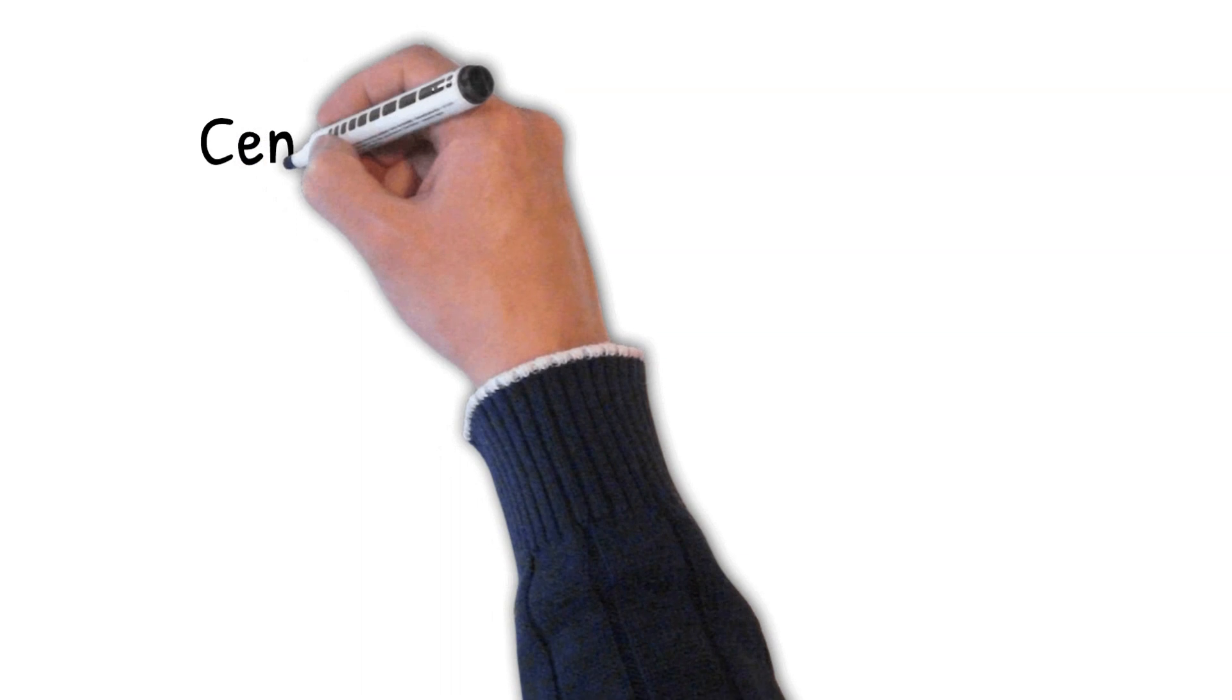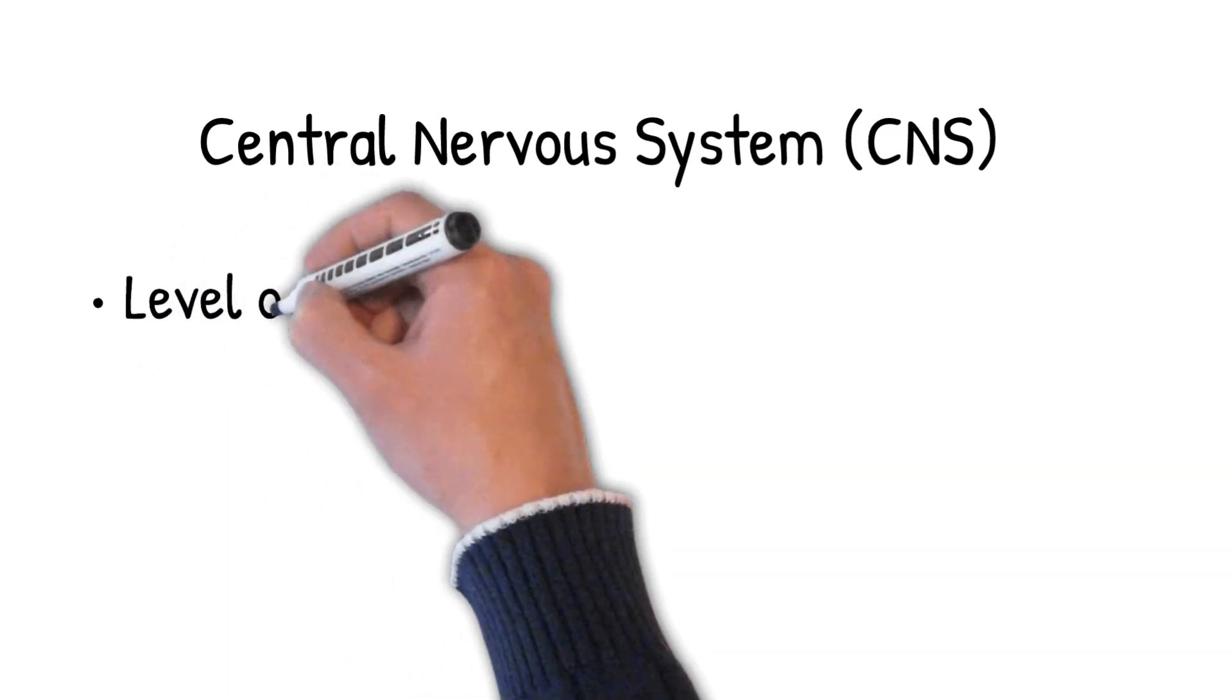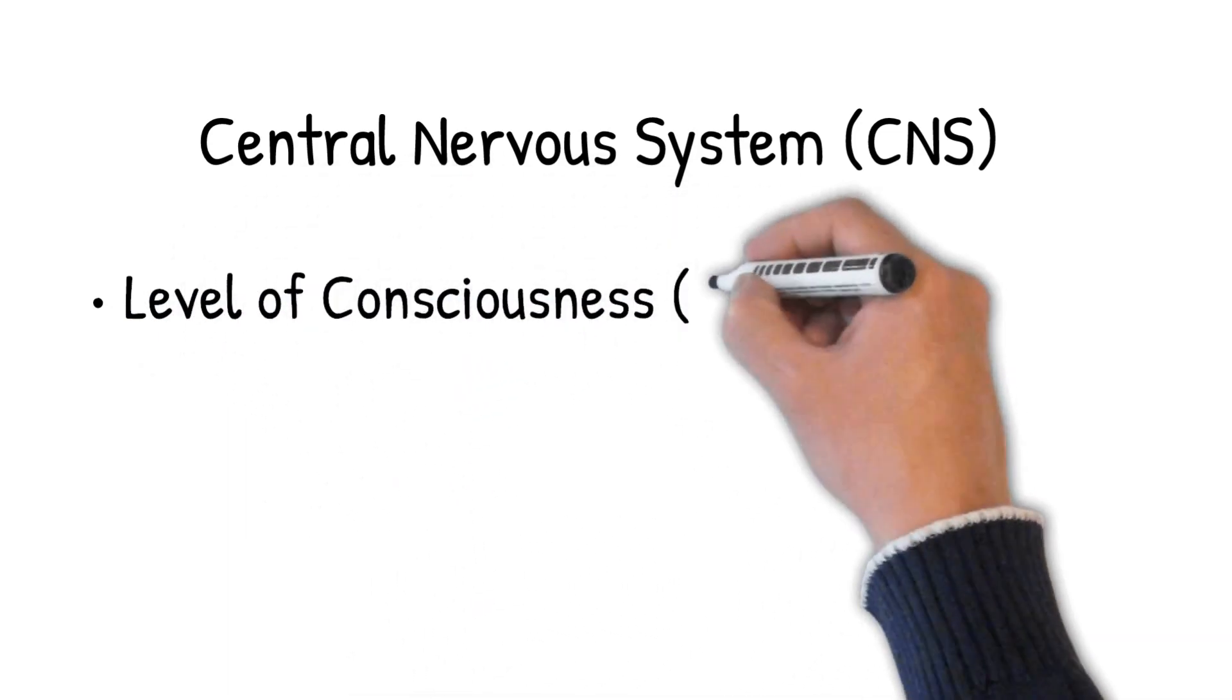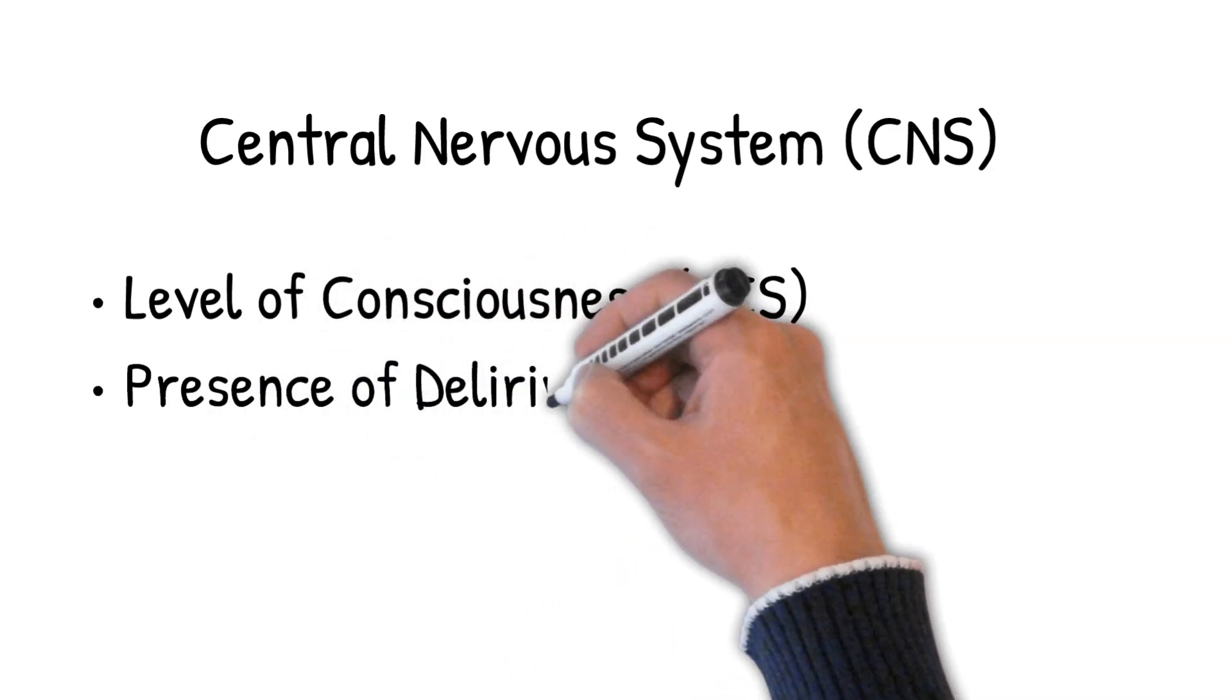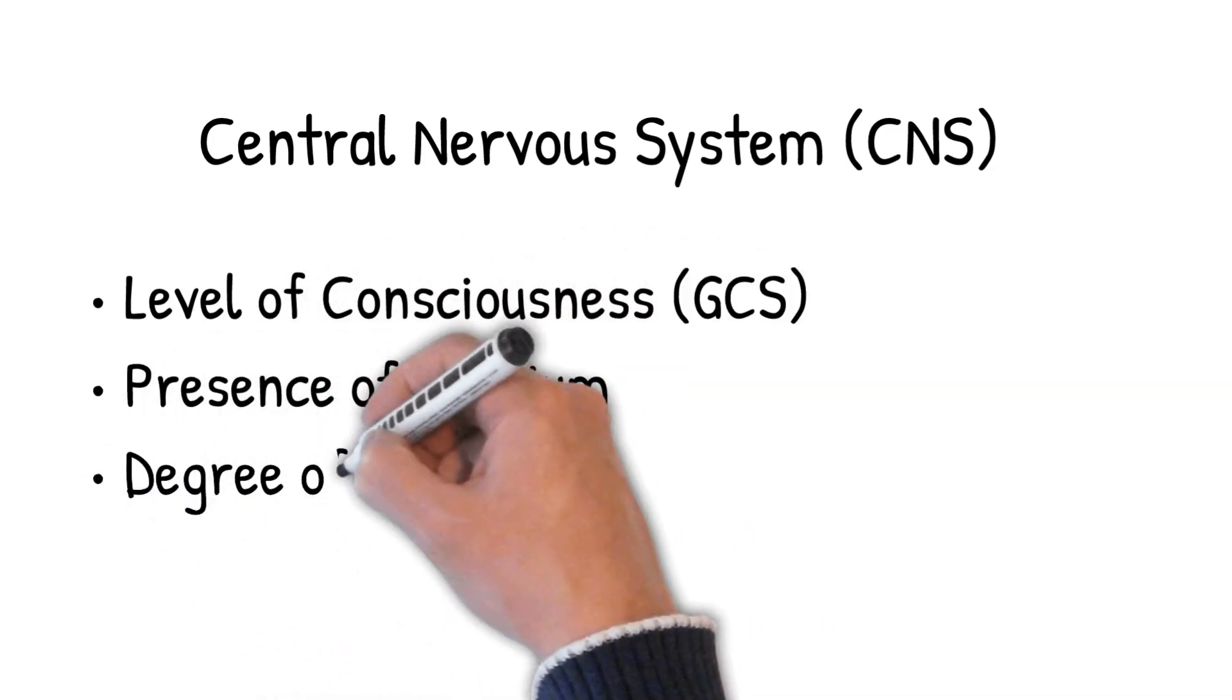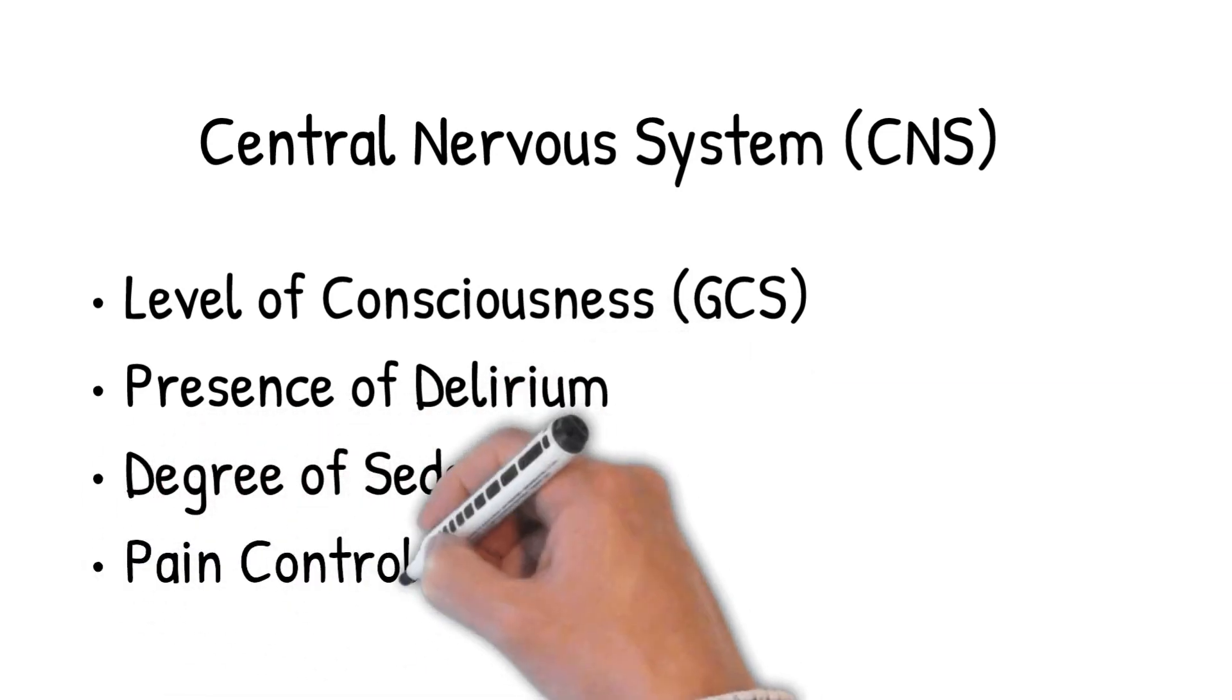Let's start with the central nervous system. Generally you check the level of consciousness of the patient like Glasgow coma scale, any presence of delirium, the degree of sedation and the target sedation as well, in addition to pain control.